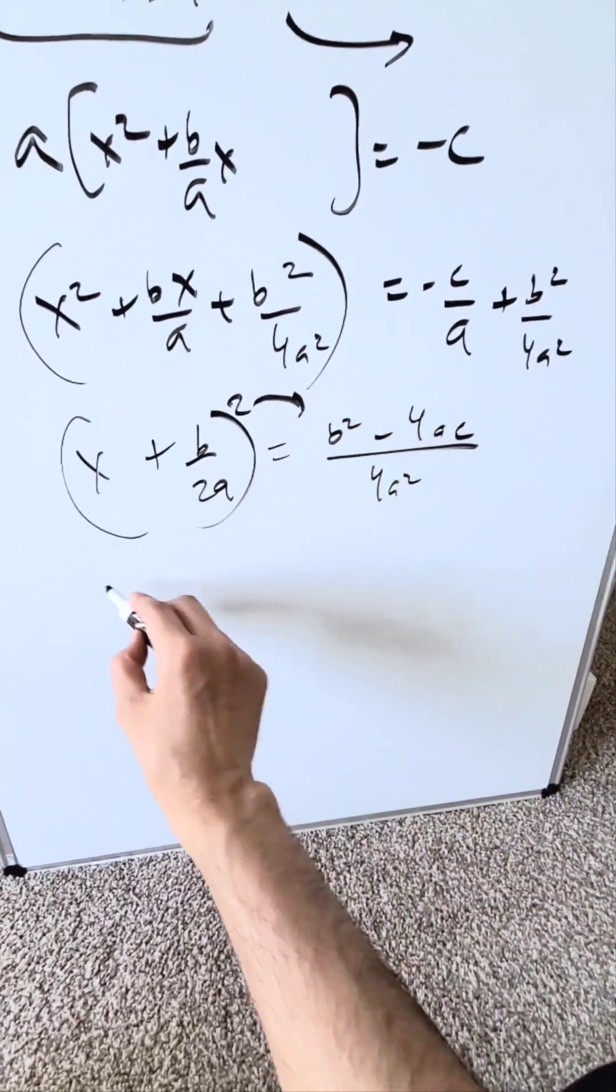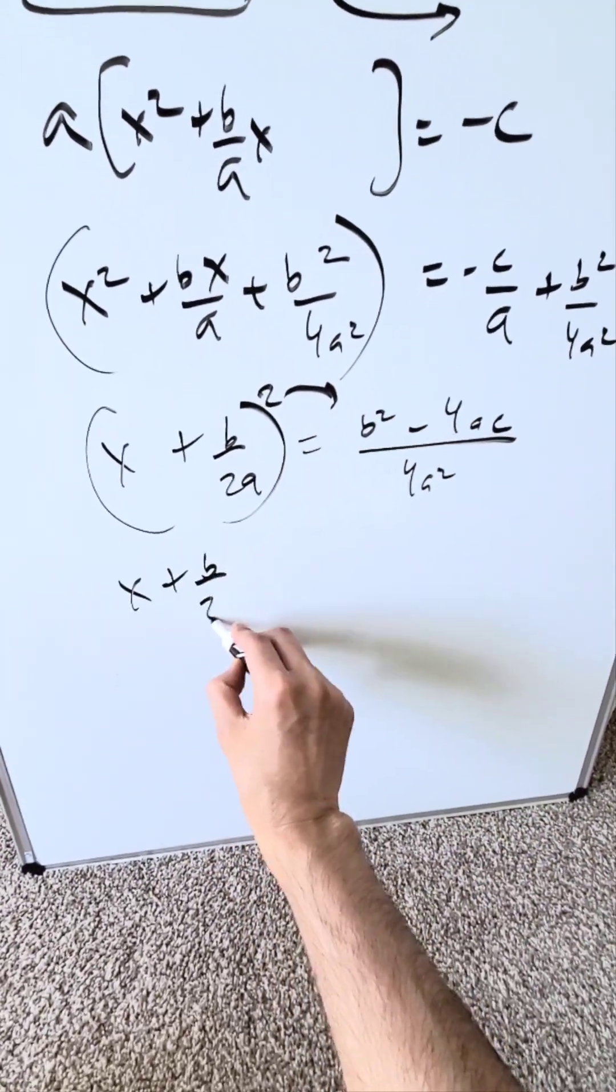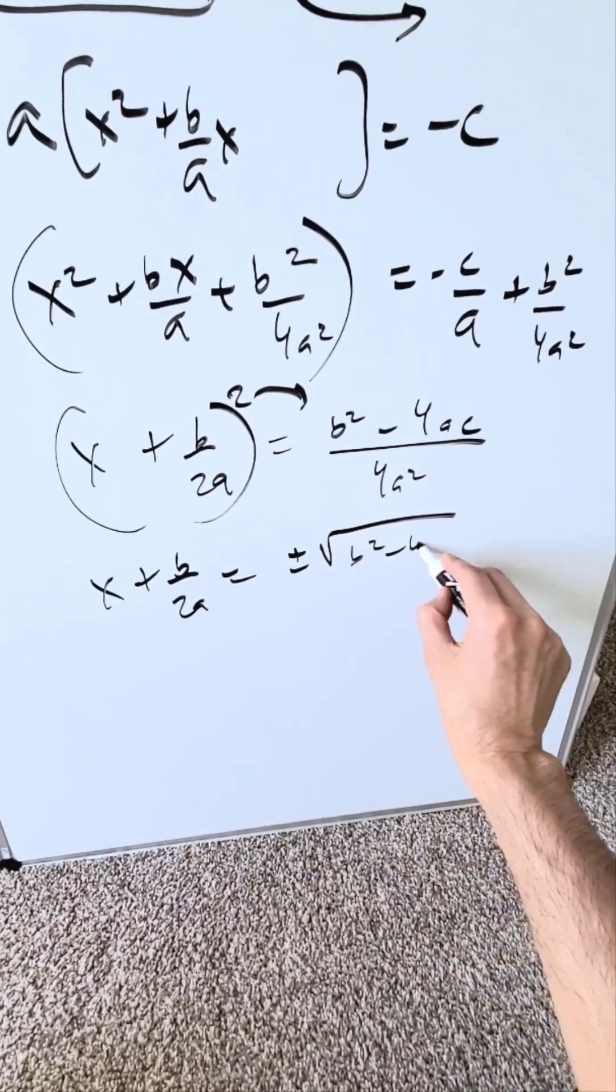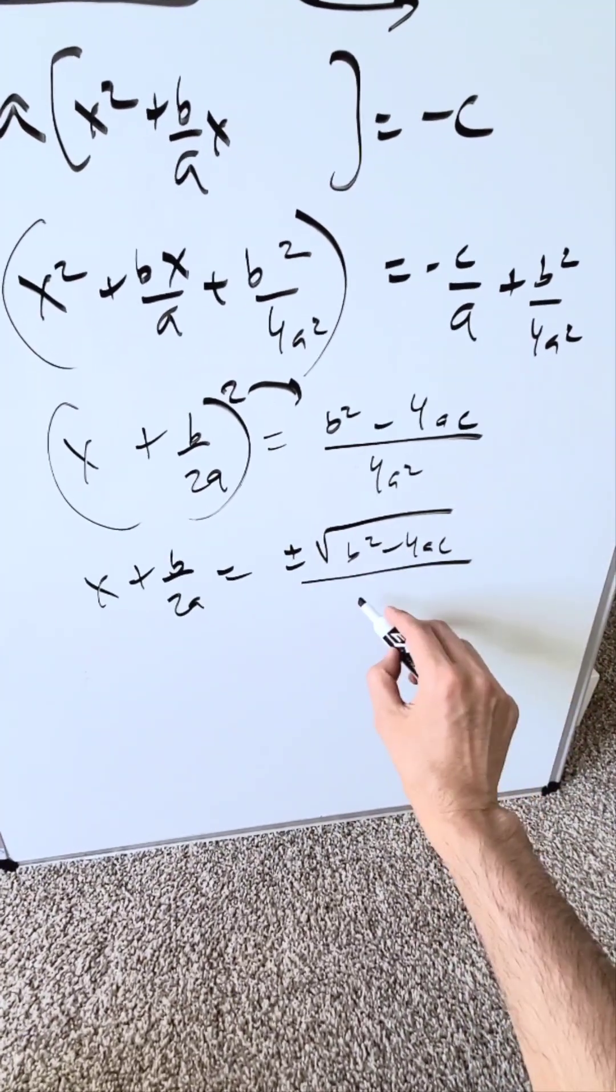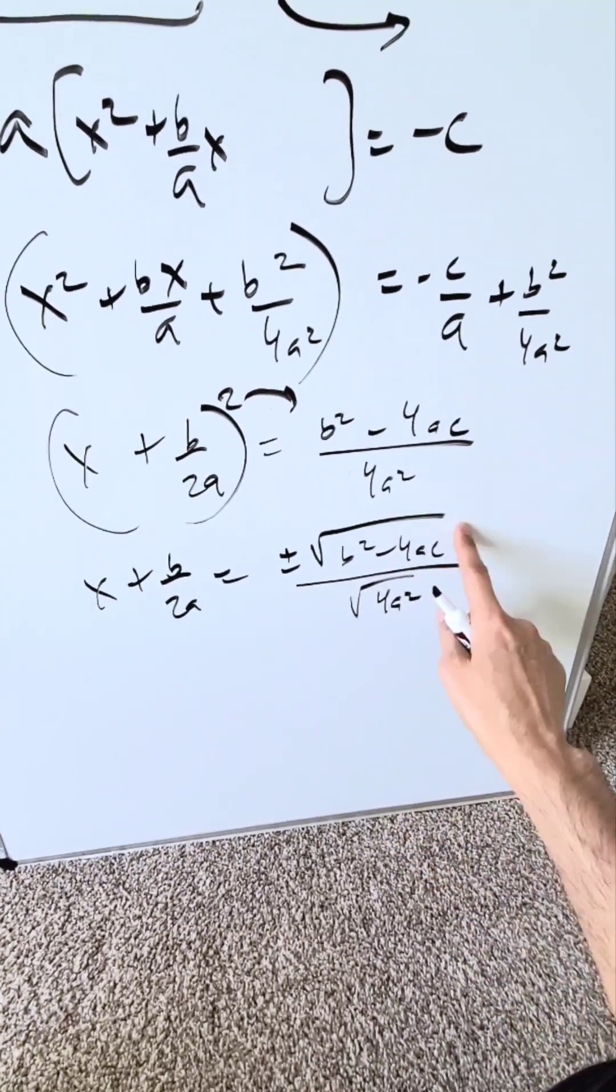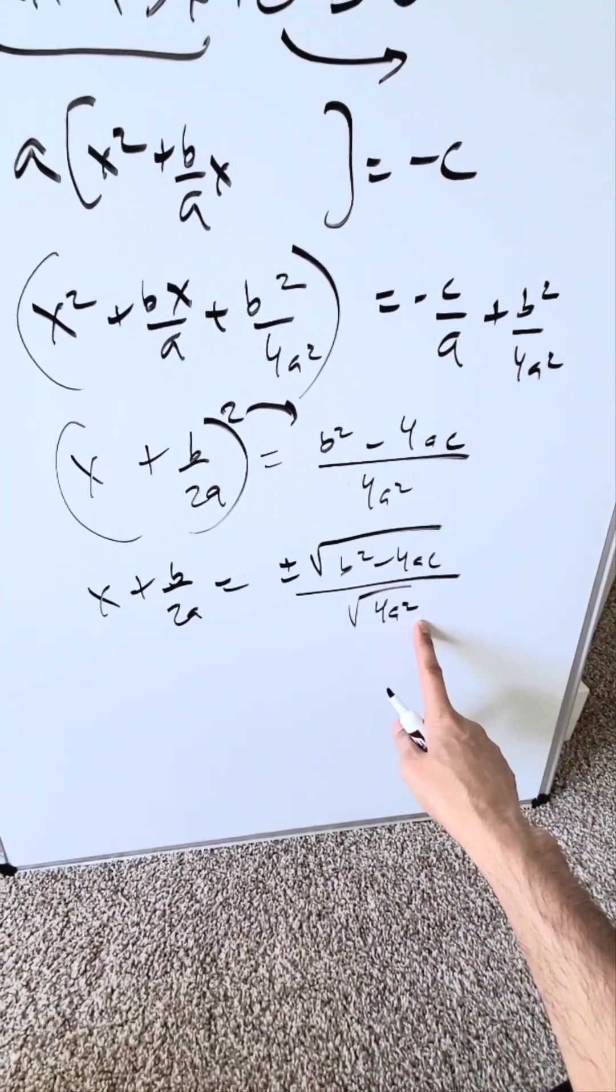Push the square on the other side. I have x plus b over 2a is equal to plus and minus square root b squared minus 4ac divided by square root of 4a squared. And there's nothing wrong with you separating your square root into numerator and denominator. It's a property of radicals.